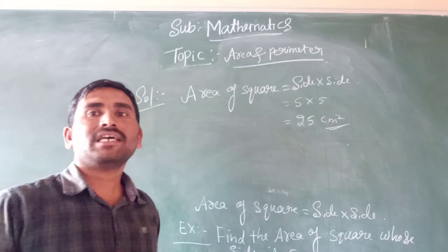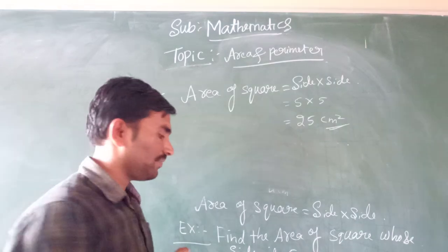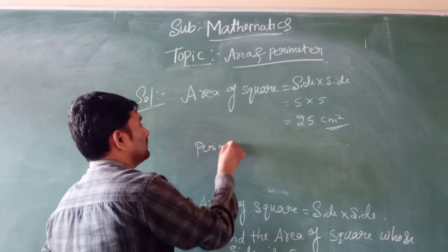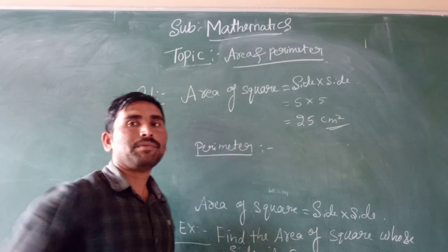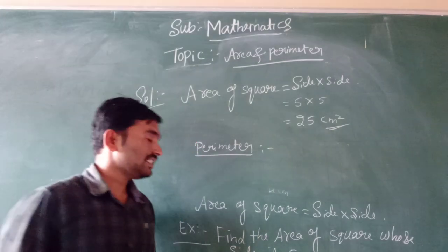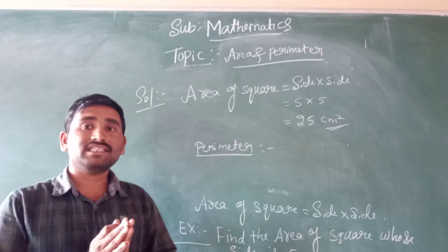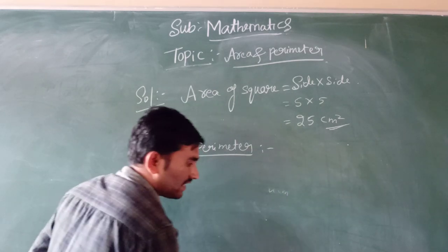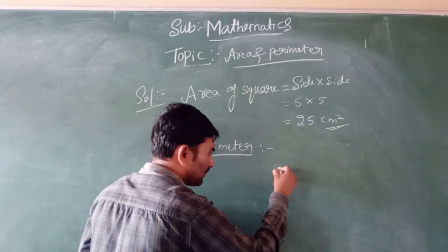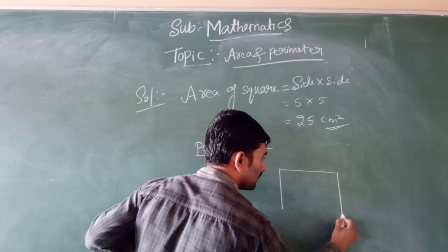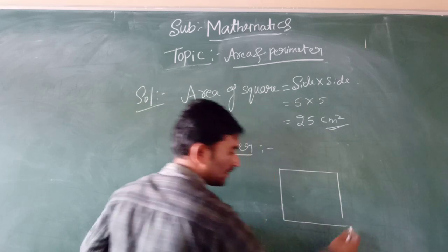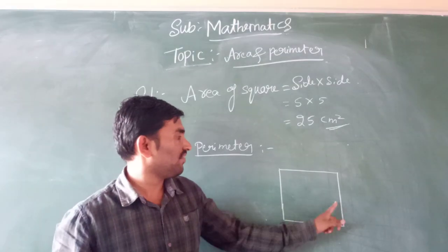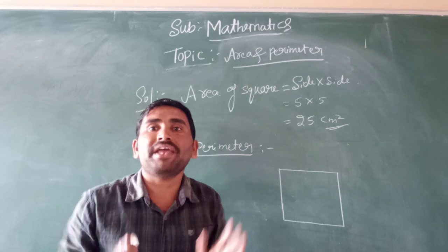Next topic: Perimeter. Perimeter means sum of the lengths of a closed figure. This is a square diagram. The sum of the lengths of a closed figure is called Perimeter.